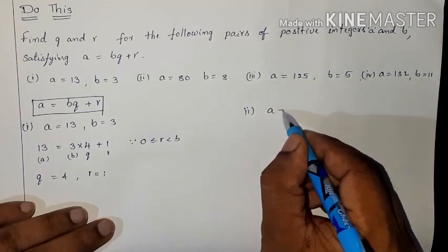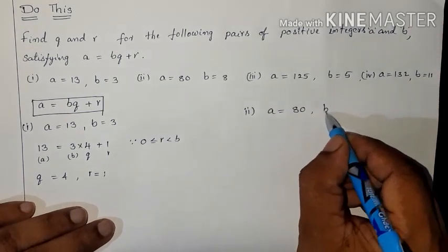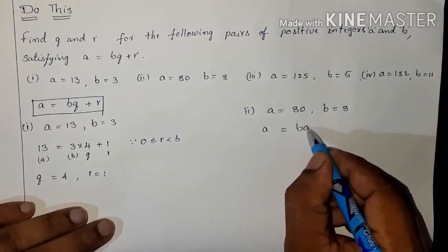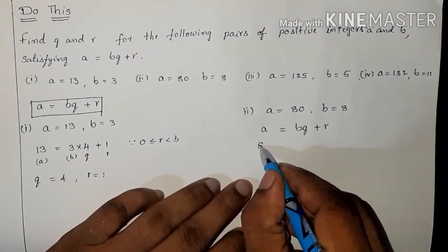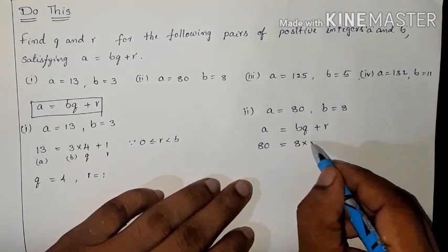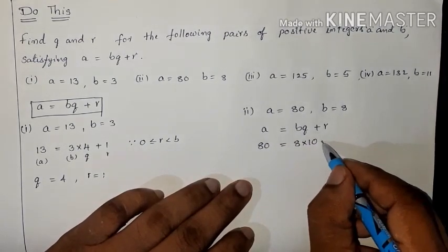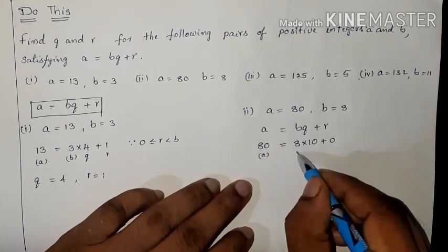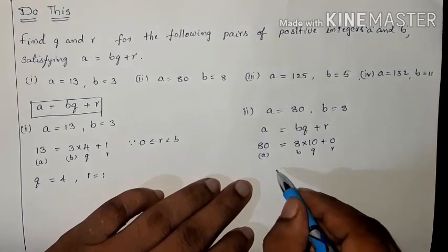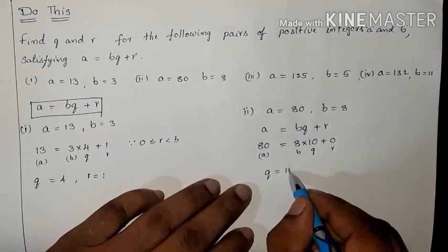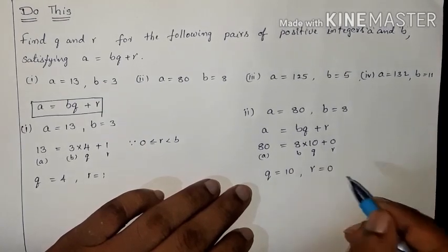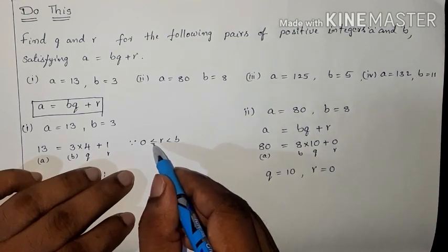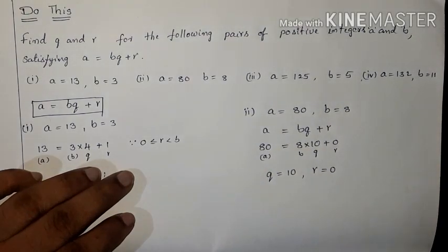Second problem: A is equal to 80 and B is equal to 8. Condition A equals BQ plus R. So 80 equals 8 into 10 plus 0, which gives 80 plus 0 equals 80. Therefore Q is equal to 10 and R is equal to 0.